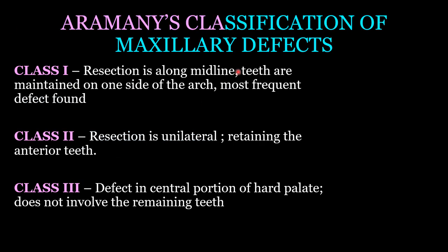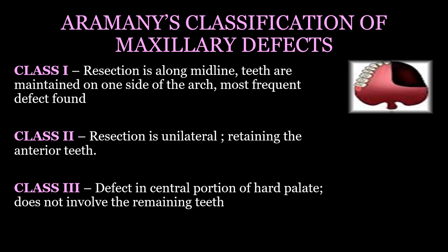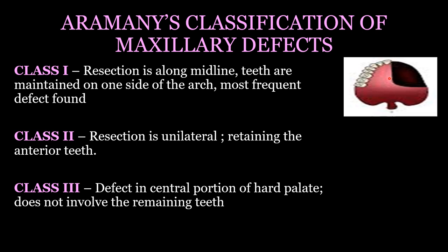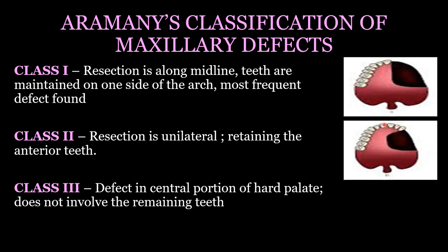Now the classification of maxillary defects. Aramany classified the maxillary defects into six classes — this classification is very important when answering exam questions. Class one: the resection is along the midline and the teeth are maintained on one side of the arch; this is the most frequent defect. Class two: the defect is unilateral, it retains the anterior teeth, and is treated as Kennedy's class two when designing the definitive obturator.